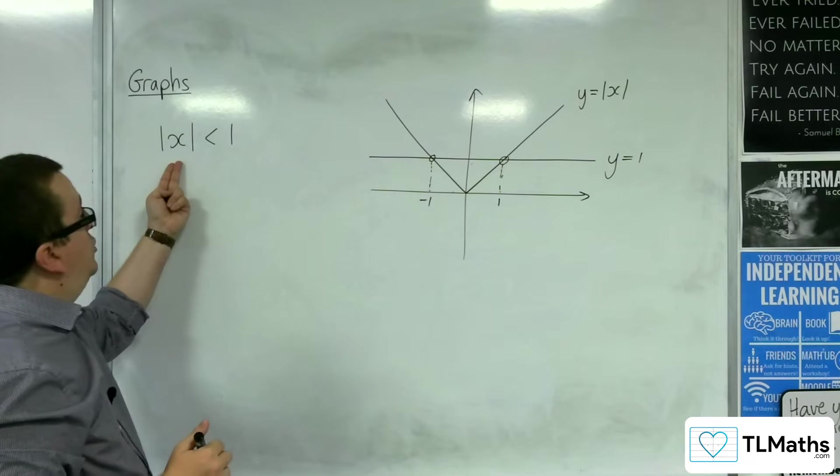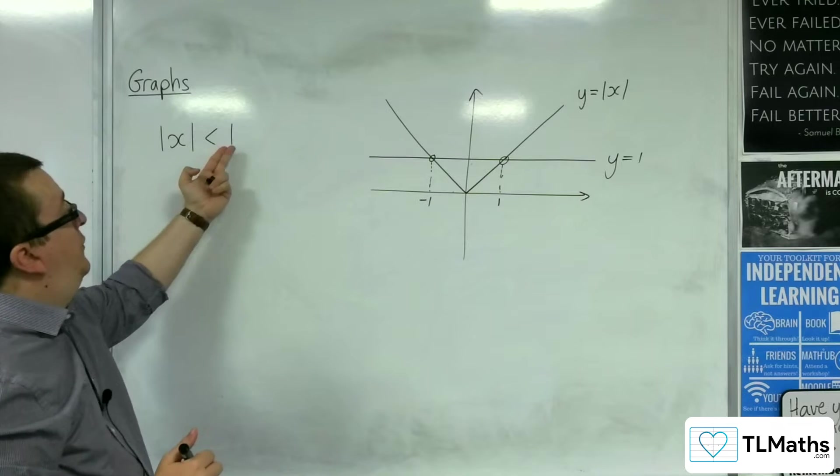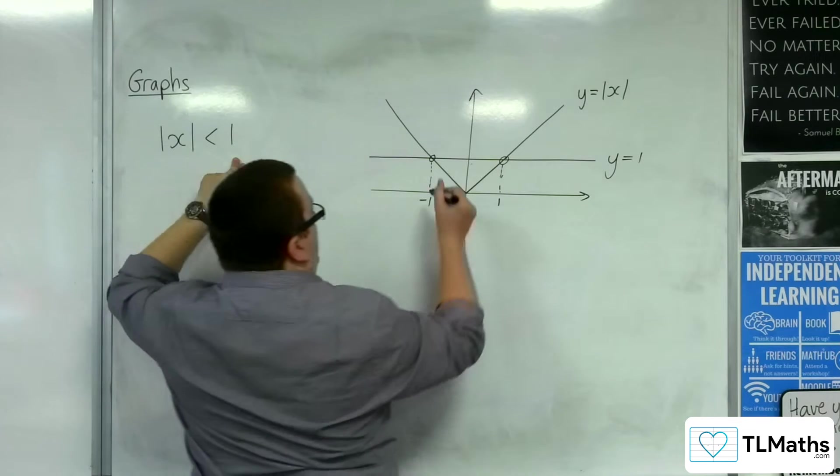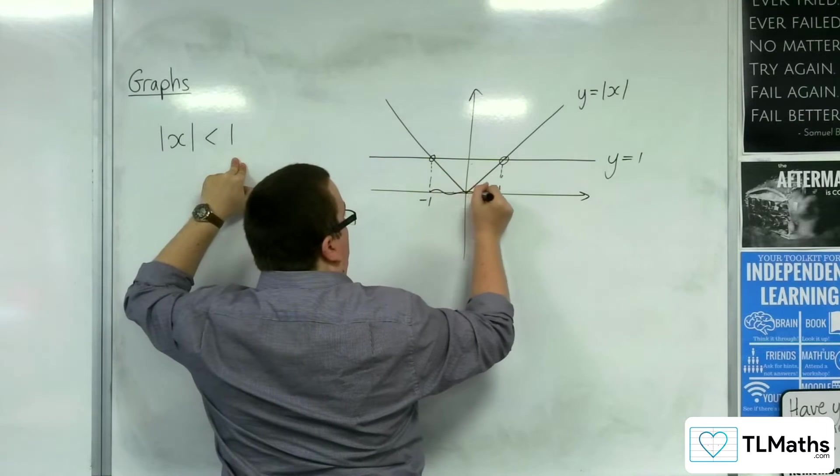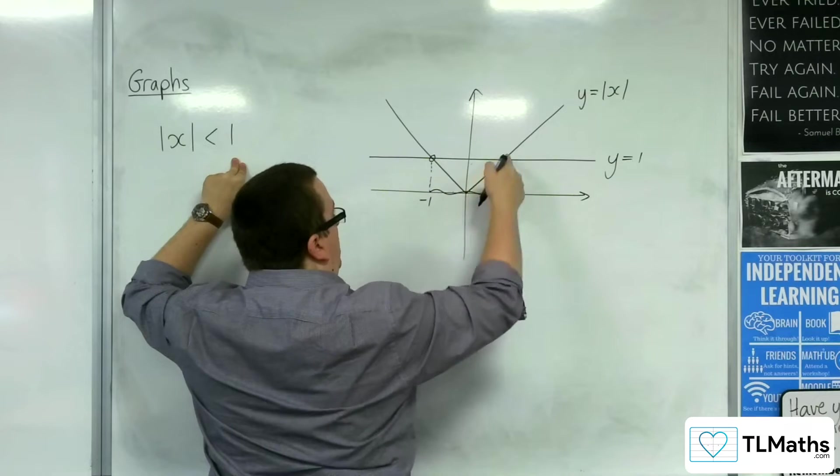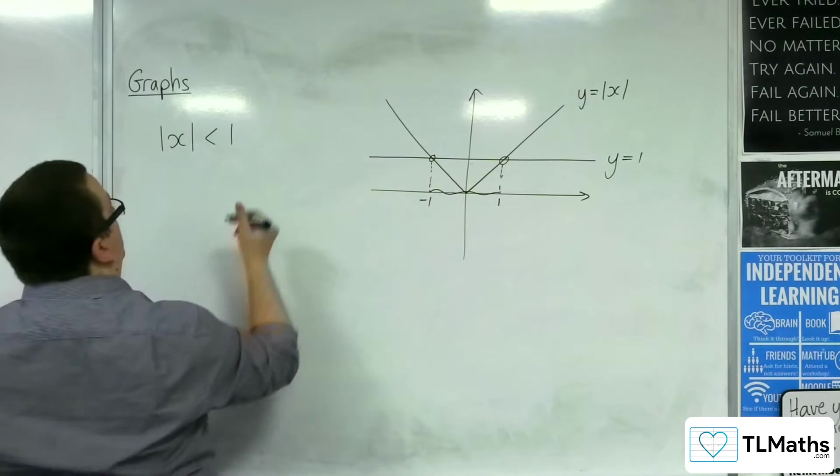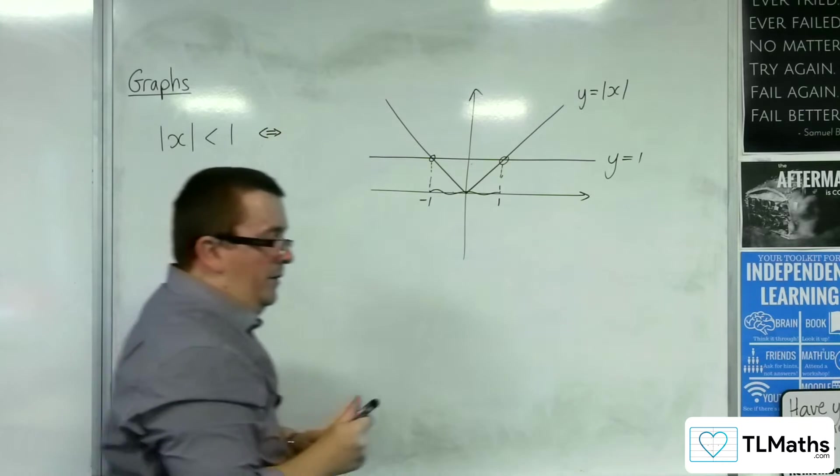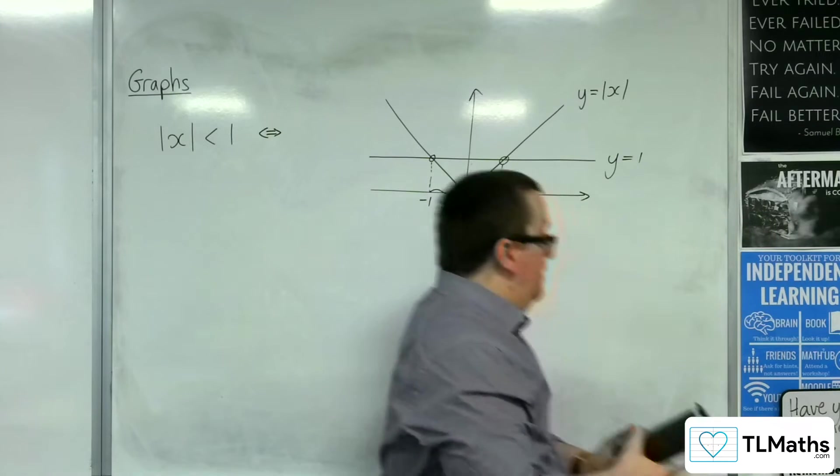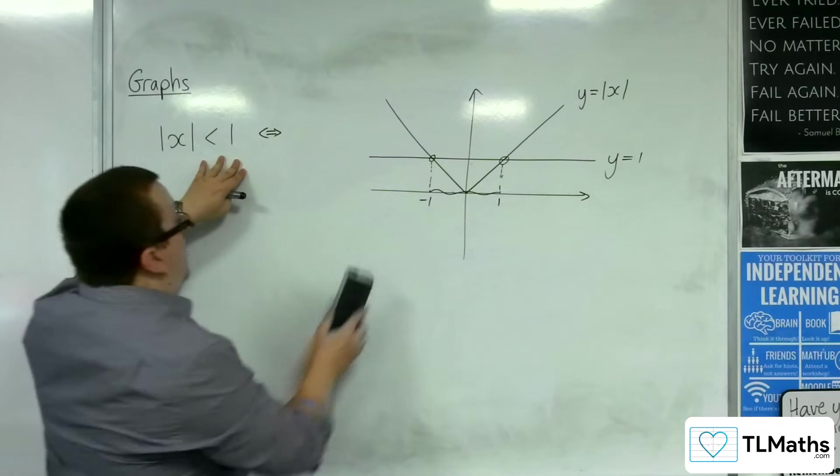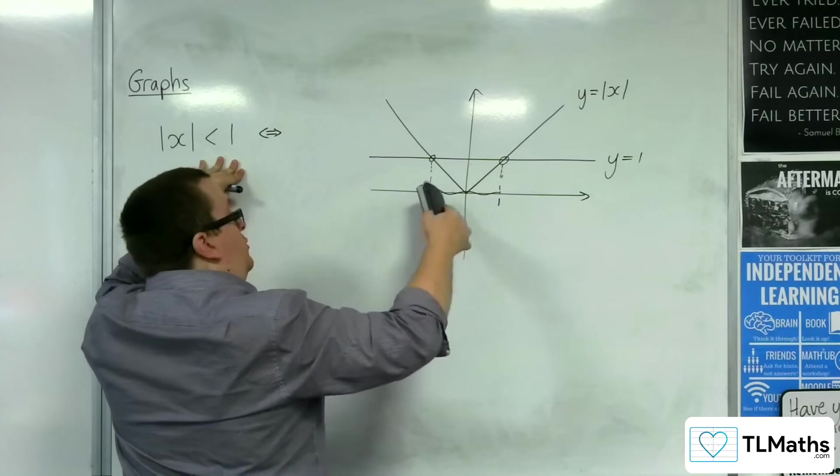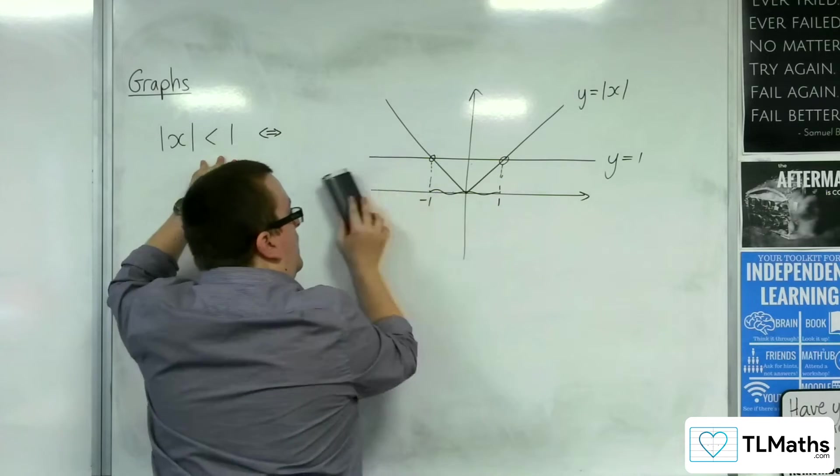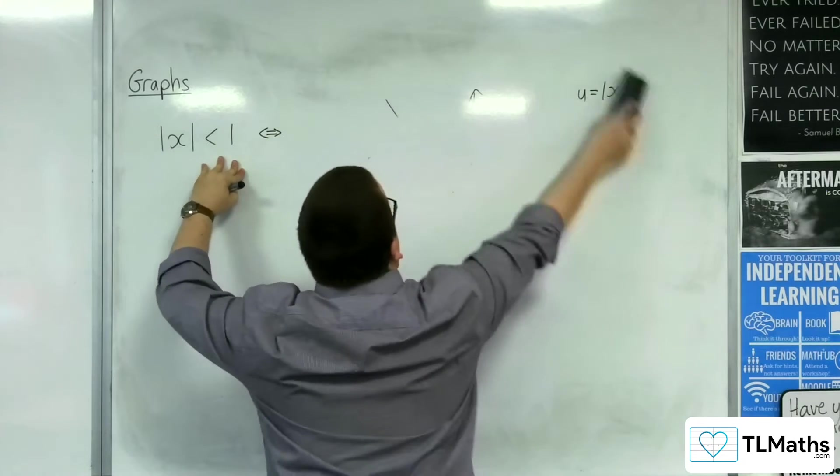So when we're asking where is the modulus of x less than 1, where is it below y equals 1, we are saying, well, it's below it there in that region, between minus 1 and 1. So, what I can write down is that mod x is less than 1 is equivalent to writing down that x is between minus 1 and 1. Those two things mean the same.